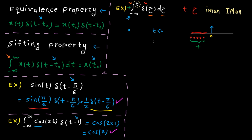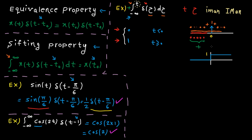Now let's consider the scenario when t is equal to or greater than 0. The integral is from minus infinity to somewhere past 0. Since t is greater than 0, we pass the origin for sure. The function is 0 everywhere except at the origin, which is 1. So if we add them all together, we end up with 1. Let's plot this function: for t less than 0 it is 0, and for t greater than 0 it's 1. It's clear that this is the unit step function — so the final answer is u(t).